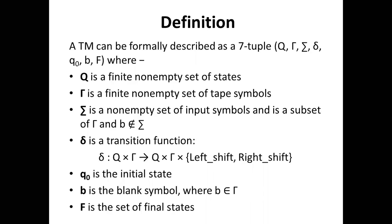q₀ is the initial state. b is the blank symbol, where b belongs to Γ. F is the set of final states.